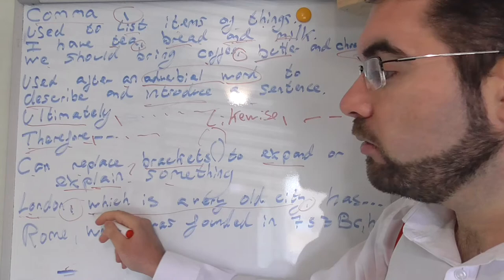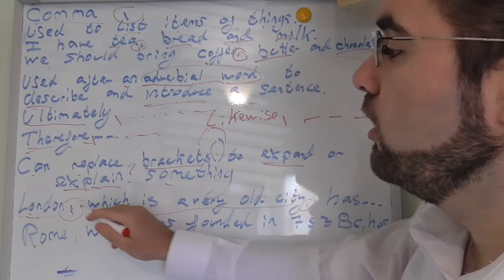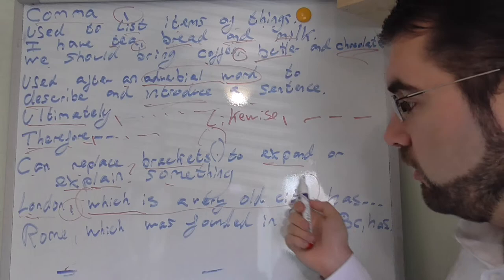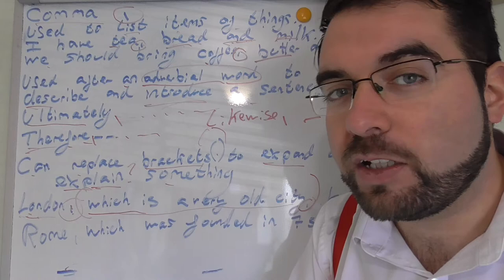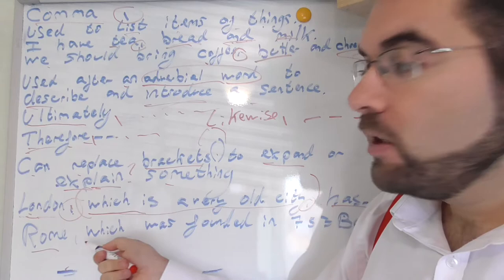So London, comma, which is a very old city, comma again, to close like a bracket. We open the brackets and close the bracket. London, which is a very old city, has a lot of people, a lot of streets, a lot of history, has other things.